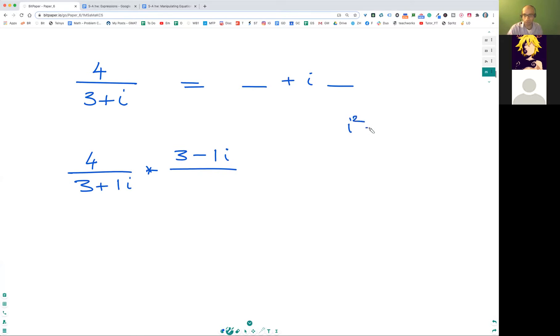Remember, i squared is going to be negative one. i is equal to square root of negative one. So now we multiply the top and the bottom by the same number. This is called a conjugate. All you're doing is you change the plus to the minus, and magic happens here.